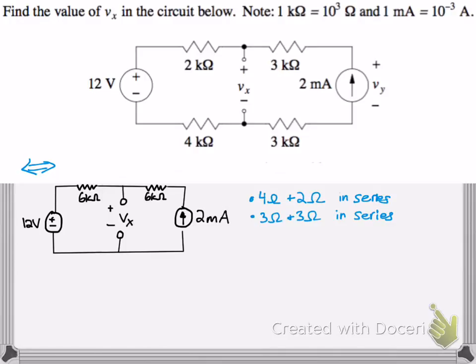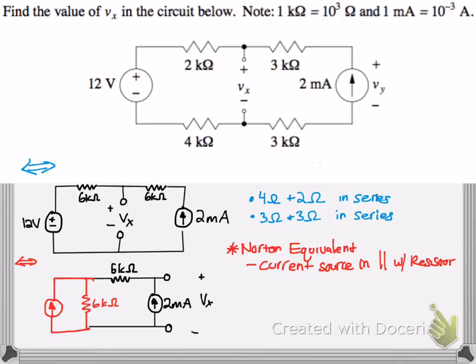What we're going to use is our Norton equivalent exchange here. You take your current source, you make your battery into a current source that's in parallel with the resistor. We're going to take that 12 volts and turn it into a current source in parallel with that 6 kiloohm resistor right there.